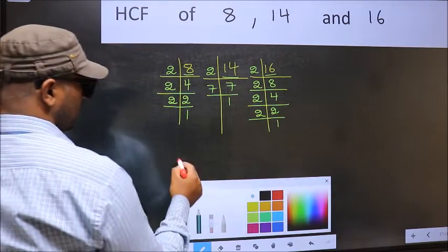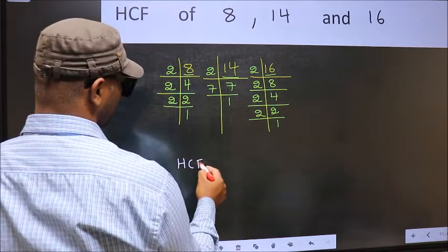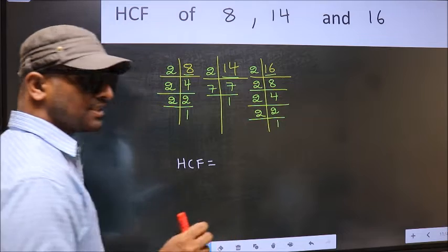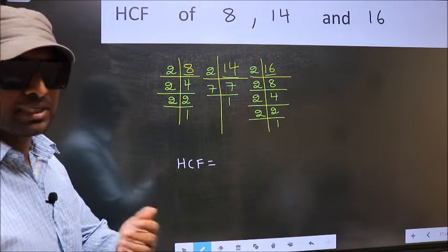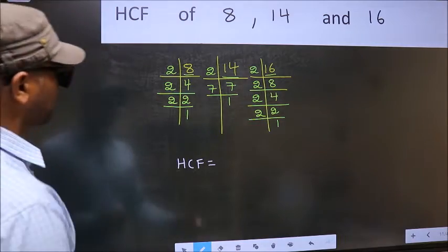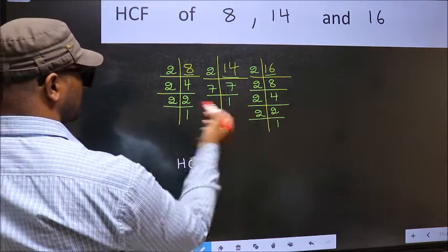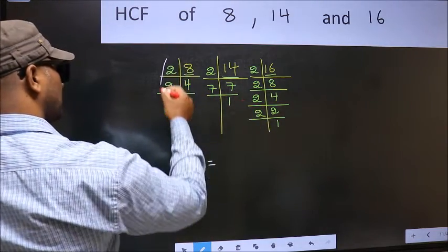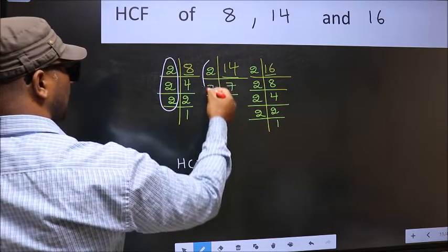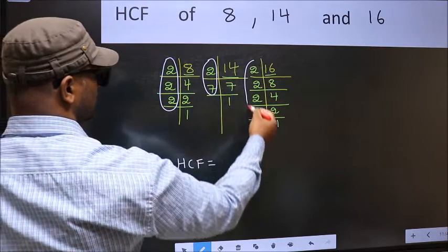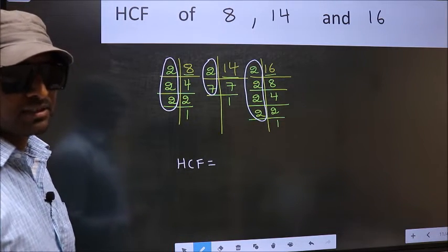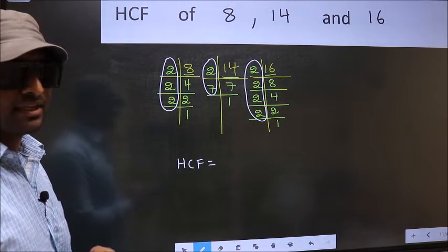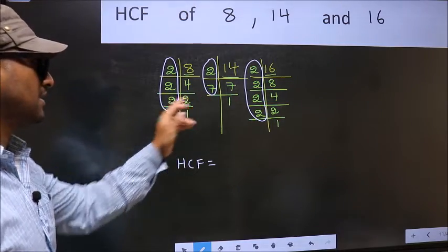Therefore our HCF is the product of the numbers which should be present in these 3 places, that is here and here and also here. So now let us find the numbers which should be present in these 3 places.